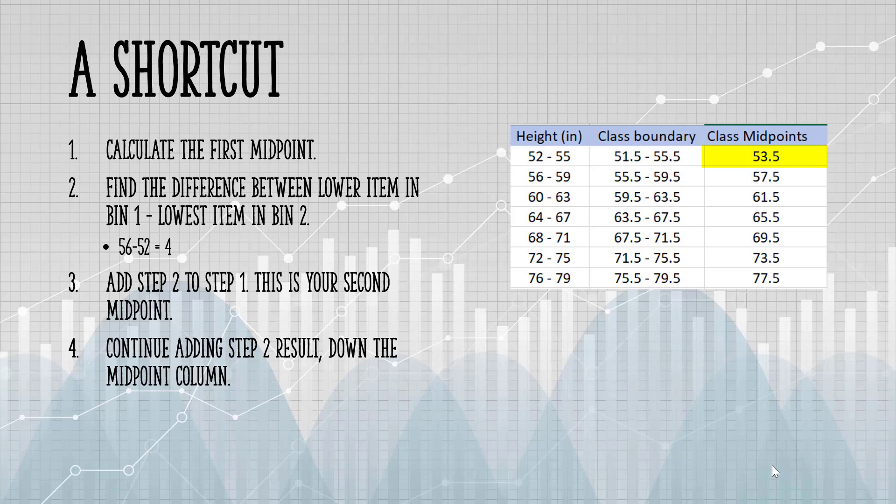Note the difference between the lowest item in bin 1 and the lowest item in bin 2. For this example, the lowest item in bin 1 is 52. The lowest item in bin 2 is 56. That's a difference of 4. Add this number to the midpoint you found in step 1.